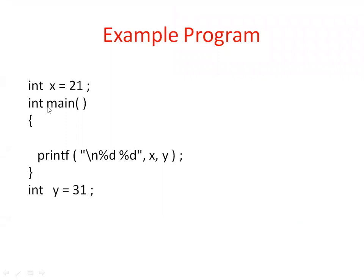I have written a simple C program containing two variables. This is my main function. Before main, I have declared one variable x with the initial value 21. If a variable is declared outside of the main, then that is a global variable — that means its scope is global. Without redeclaring it, we can use it in any function; that is called global scope or you can call it a global variable.